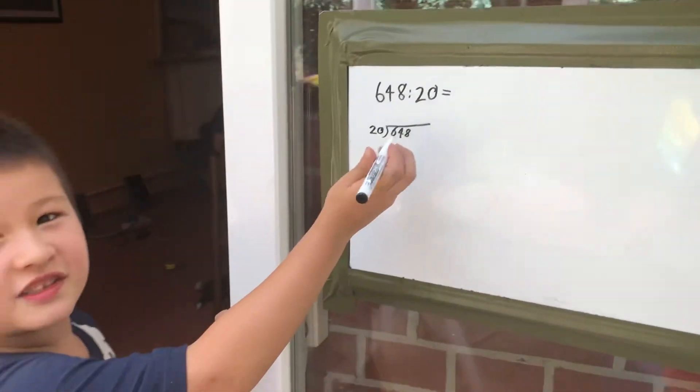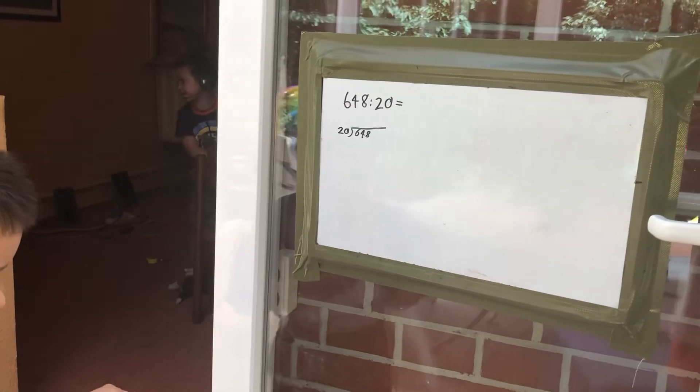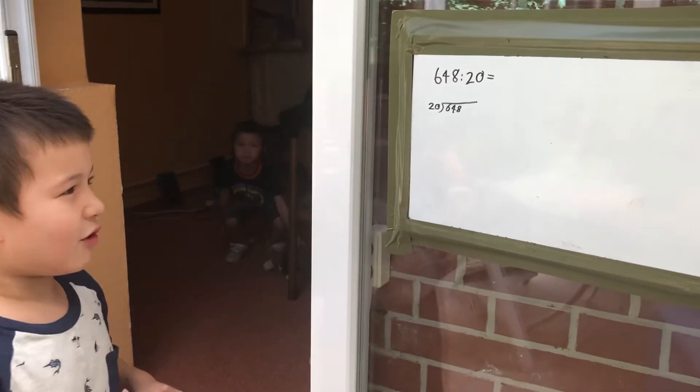So, 20 can't go into 6, so we take the next digit. How many times can 20 go into 64?